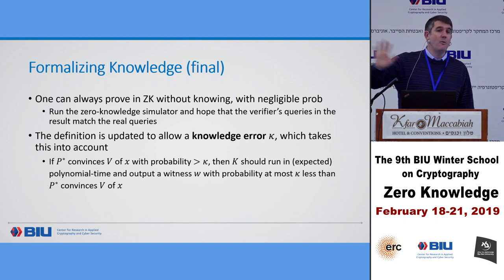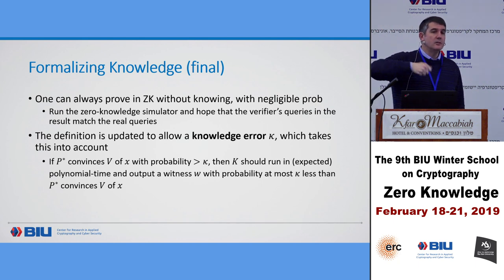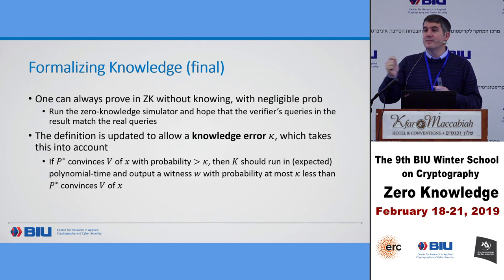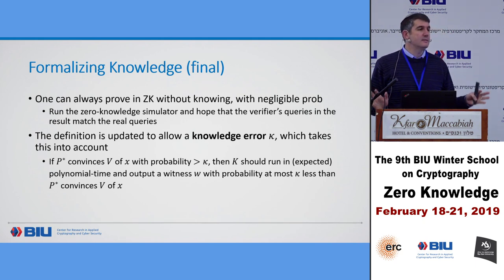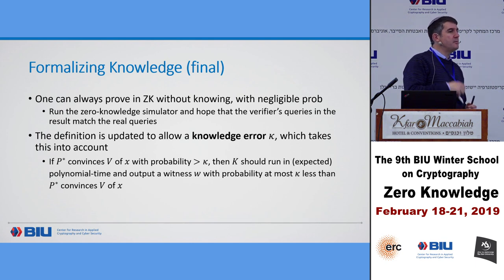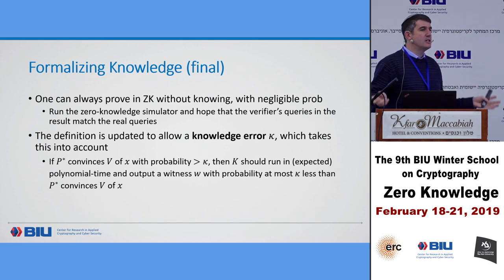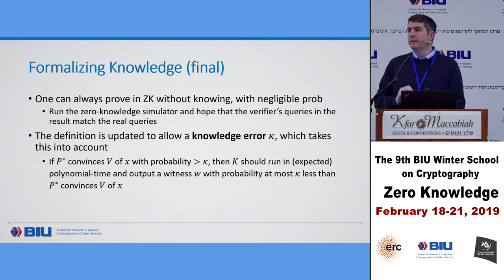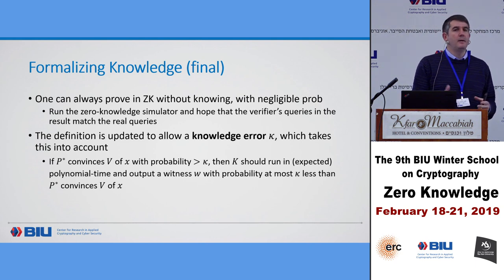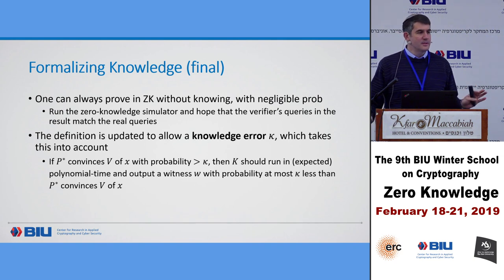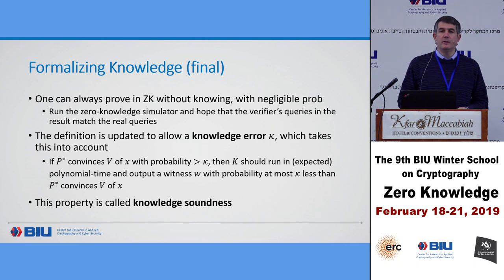Our prover in a zero knowledge proof will never send an actual witness — that would destroy zero knowledge. The prover sends commitments or whatever the proof requires, but not the witness explicitly. Now we can interact with that prover and somehow output the witness. This works for any prover and any cheating strategy, up to the probability kappa of the knowledge error where the prover can just get lucky. This property is called knowledge soundness — not soundness in the traditional sense, but knowledge soundness. It's similar but stronger.